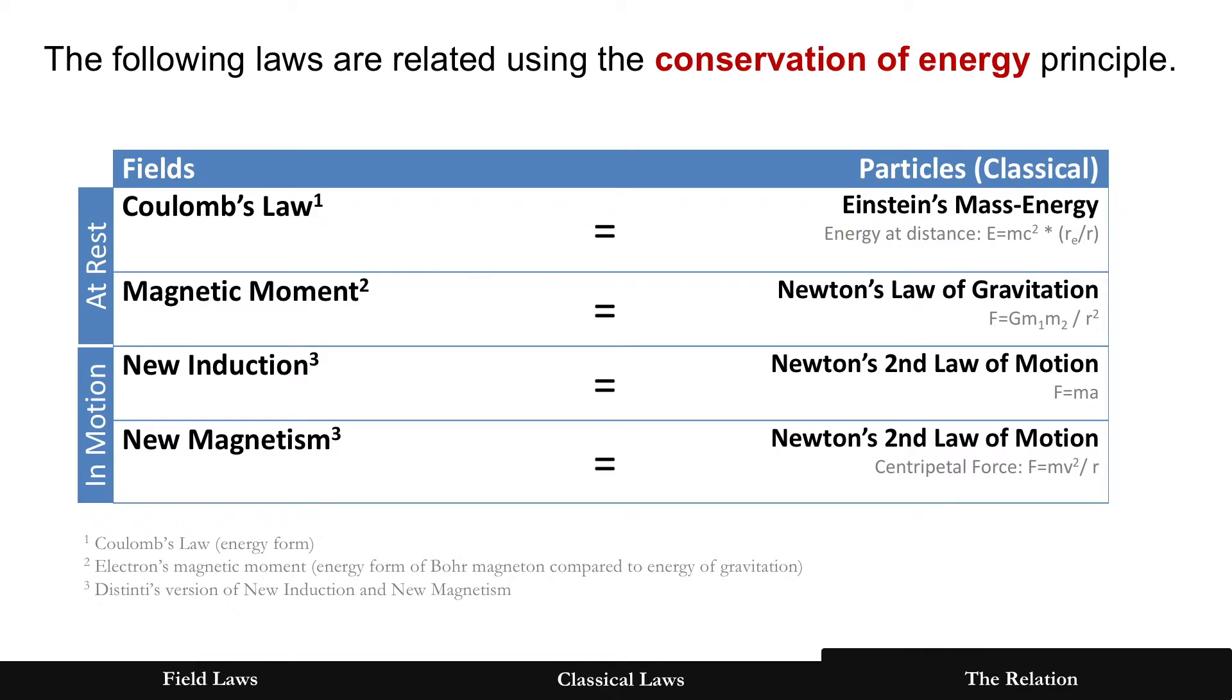All right, how are all these tied together? Two at rest: Coulomb's law, magnetic moment, the fields, and you can see the classical ones there, Einstein and Newton on the right. Two at rest for two different types of waves, longitudinal and transverse.